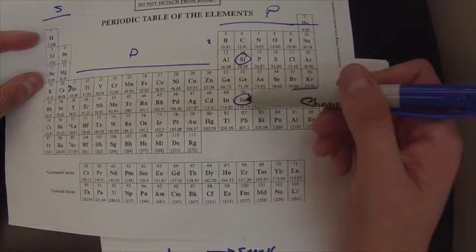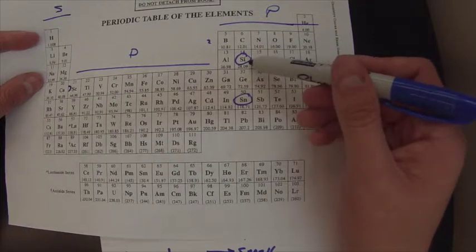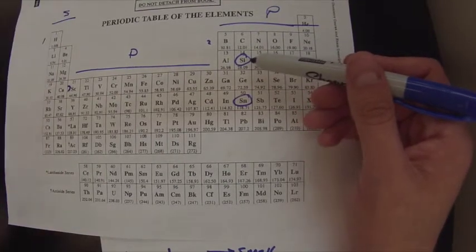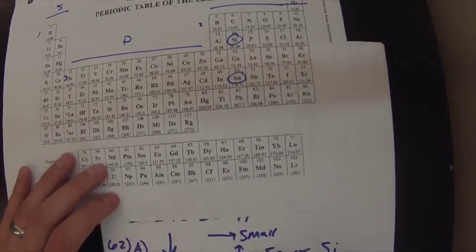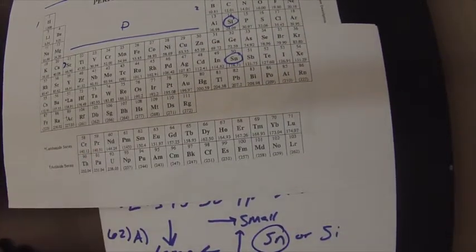So obviously tin is the larger one, silicon is the smaller one, and it asks for the larger. So there you go.